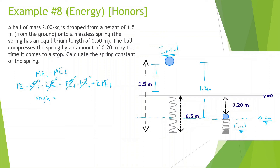So: mass times gravity times height equals one half kx squared. The mass is 2, gravity is 10, height is 1.2 meters. 2 times 10 times 1.2 times 2 divided by 0.2 squared gives k equals 1,200 newtons per meter.